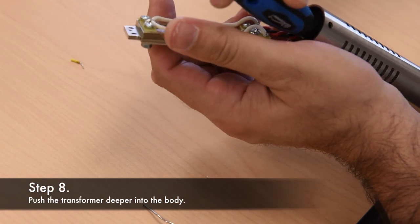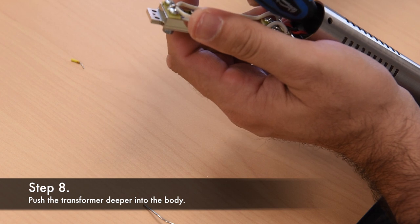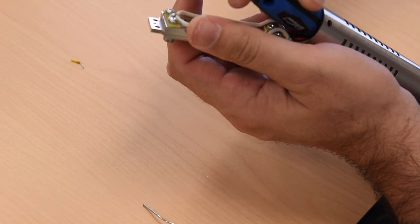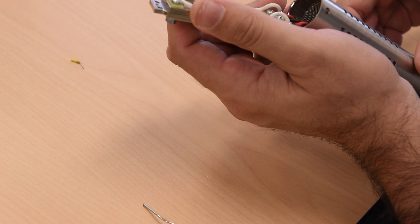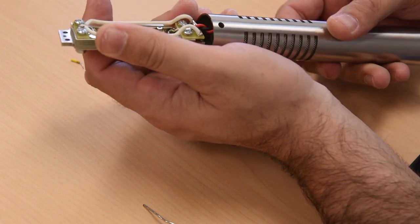Use something long and straight to help push the transformer deeper into the microphone body. You'll need to make sure all wires are clear of the grill area so there is room for the ribbon motor.